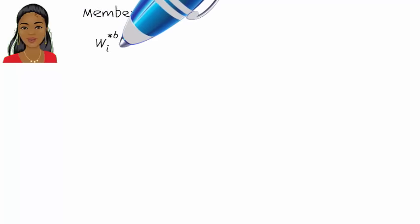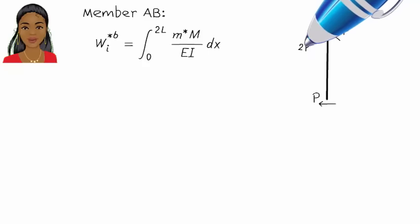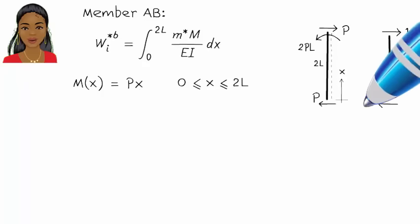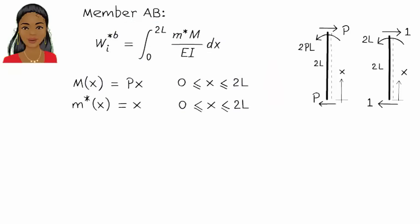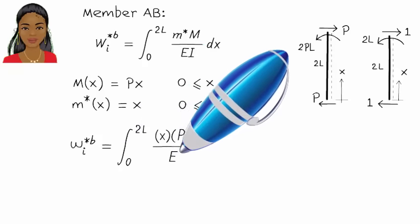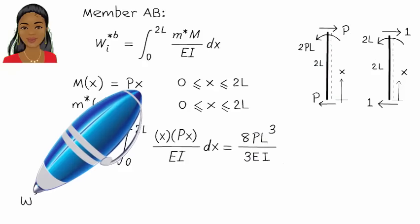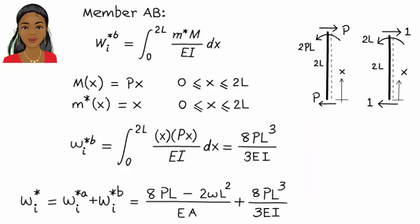Now let's write the expression for internal virtual work due to bending. Here's the free body diagram for the member as a beam. Using the diagram, we can write the bending moment equation for the member as M(x) equals P·x. For M*, we have M*(x) equals x. Then internal virtual work due to bending equals the integral expression. Assuming E and I are constant, therefore, total internal virtual work for member AB can be written combining the axial deformation term and the bending term.